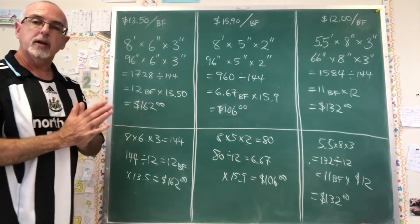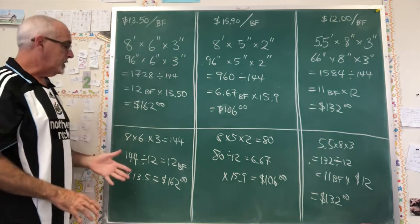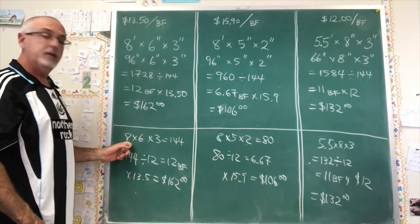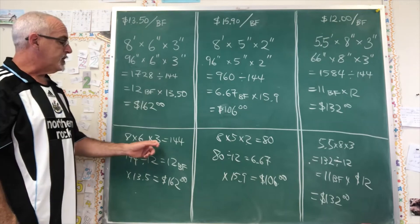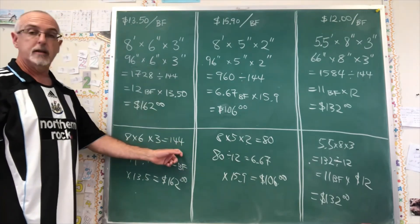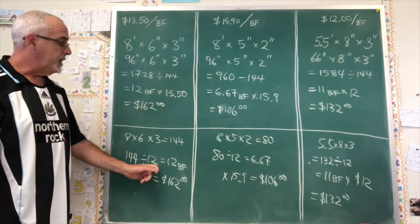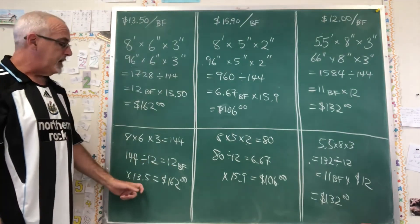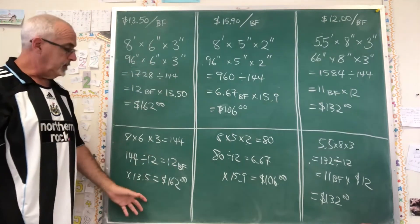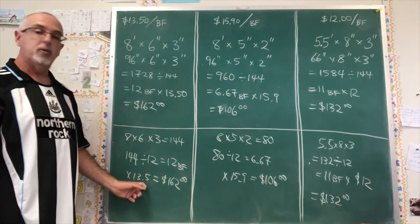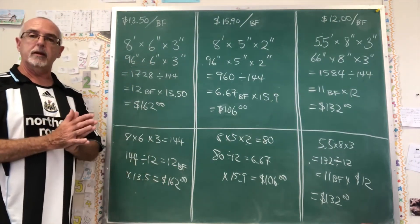But the shortcut that might make it a little easier to do this when you don't have a calculator is to multiply the length in feet by the width in inches and the thickness in inches to get a smaller number, which then is divided by 12 and not 144, in order to get the number of board feet, which you then, in the same way, multiply by the cost per board foot to figure out how much you're going to be paying at the cash register.